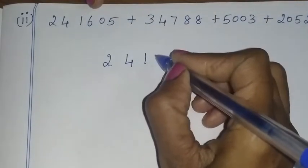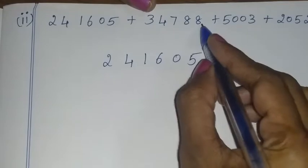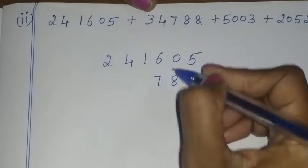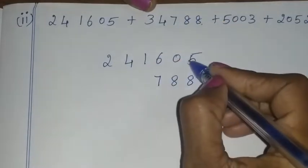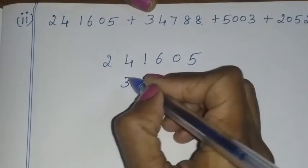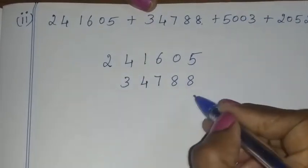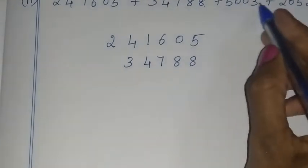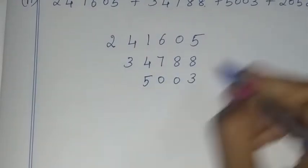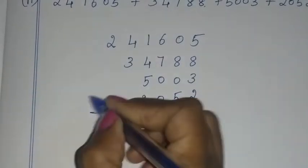First number: two, four, one, six, zero, five. Let's put in the numbers straight. 8, 8, 7 — and 4, 3 — this is a four-digit number. So 3, 0, 0 straight, 5 — that is a 4-digit number. We will start: 2, 5, 0, 2.